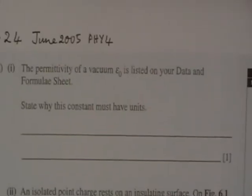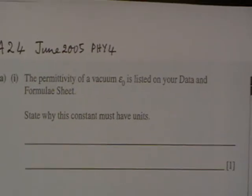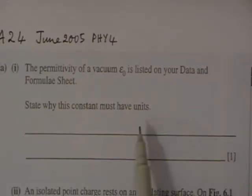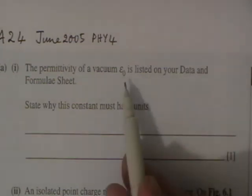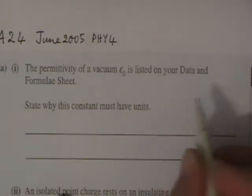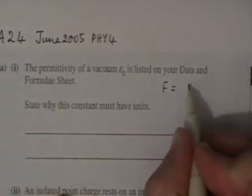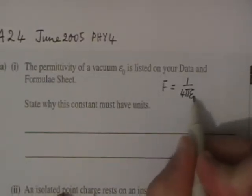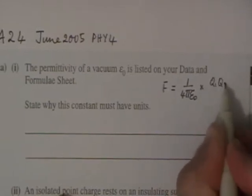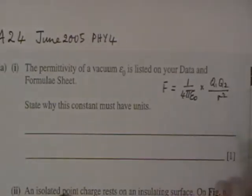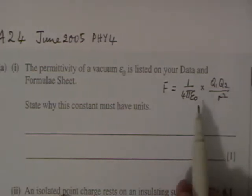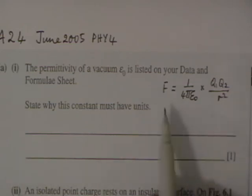The first part of the question asks why the permittivity of a vacuum epsilon_0 has units. Where that permittivity of a vacuum came in was in Coulomb's law. Coulomb's law states that the force is equal to 1 over 4 pi epsilon_0 times q1 q2 over r squared. So that's the force between two charged particles and epsilon_0 comes in there. It must have units in order to make sure that this equation and other equations containing epsilon_0 balance.